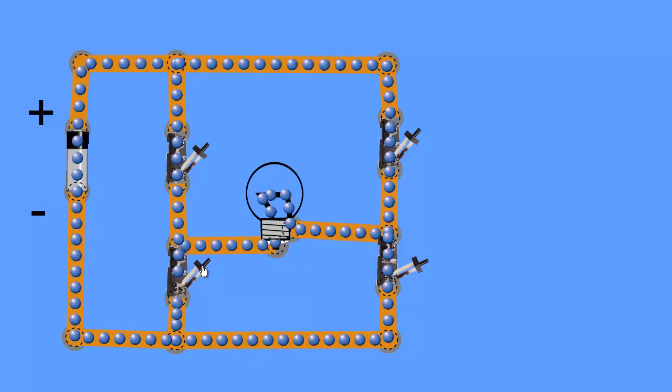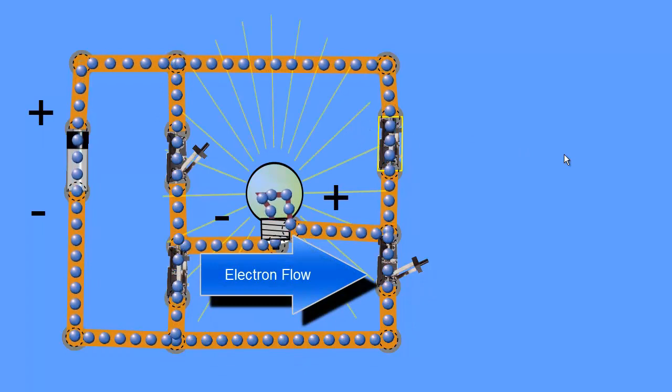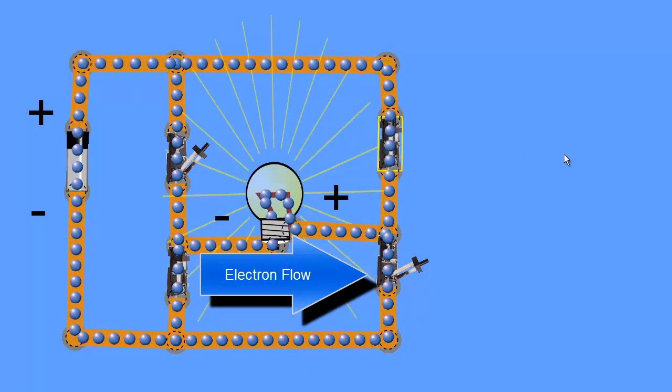So how would we have to line these switches up to get the current to flow to the right? Well, we'd have to line up this switch so that the bottom of the load, this side of the load, is hooked to the negative terminal of the battery. And we're going to line up this switch so that the other side of the load is hooked to the positive terminal of the battery. And lo and behold, our light bulb lights up and everything's good.